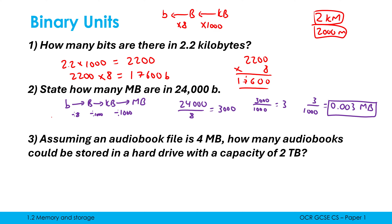The last example is framed in a context that can throw people, but it's the same question with more words. Assuming an audiobook file is 4 megabytes, how many audiobooks could be stored on a hard drive with a capacity of 2 terabytes? You need to get both values into the same unit. Let's convert terabytes to megabytes: from terabytes to gigabytes multiply by a thousand, then from gigabytes to megabytes multiply by another thousand — so multiply by a million overall. That means 2 terabytes equals 2,000,000 megabytes.